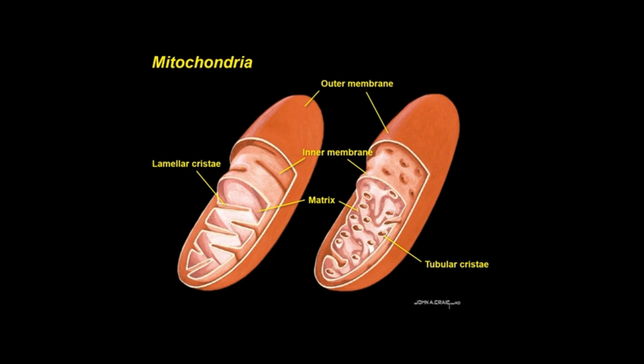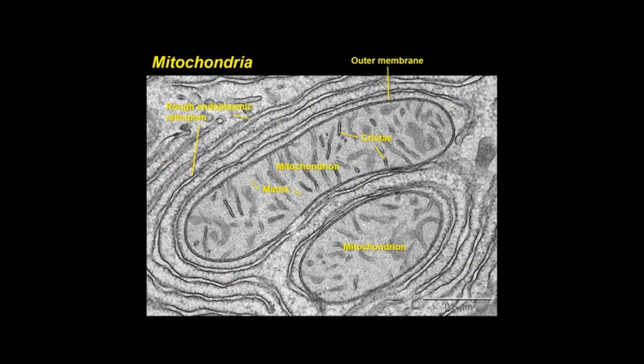The most recognizable organelle in the cytoplasm is the ATP-producing mitochondrion. They vary in size and shape and are invested by two membranes. The outer membrane has a smooth contour, whereas the inner membrane has transverse, shelf-like or tubular folds known as cristae that project into the mitochondrial matrix. Diseases that affect mitochondria, resulting in mainly muscle weakness and dysfunction, are known as mitochondrial myopathies.